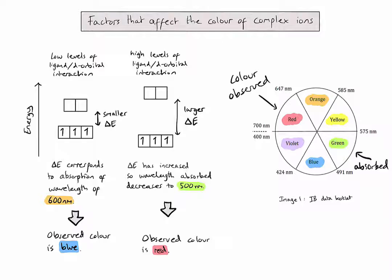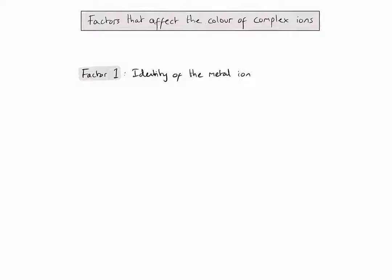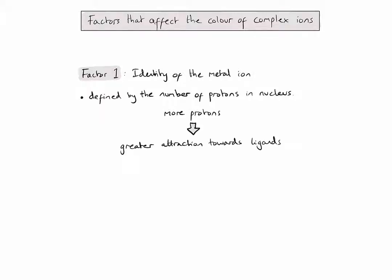For IB chemistry, we now need to consider the three factors that can affect the amount of interaction between ligands and D orbitals. The first one is the identity of the metal ion. As with any elements in the periodic table, the identity is defined by the number of protons it has in the nucleus. So if I have more protons in one metal ion than another, there will be a greater attraction towards the negative or partially negative ligands in the solution. If there's a greater attraction, pulling them closer, there's going to be more interaction between those ligands and the D orbitals, meaning there will be greater D orbital splitting.